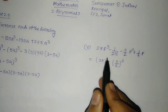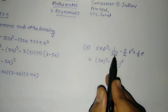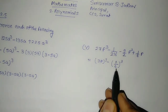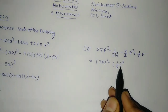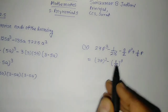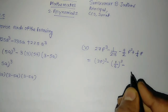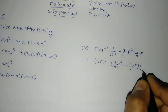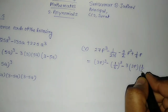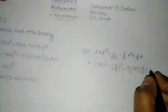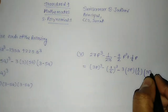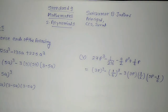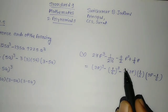3 cube gives 27 into p cube. 1 is a cube of 1 itself; 6 cube: 6 into 6 is 36, 36 into 6 is 216. Minus — I will try to write in that format: 3 into first term, that is 3p, into second term, that is 1 upon 6. And then the bracket with 3p minus 1 upon 6. Let us try to see whether we are going to get the above term or not.